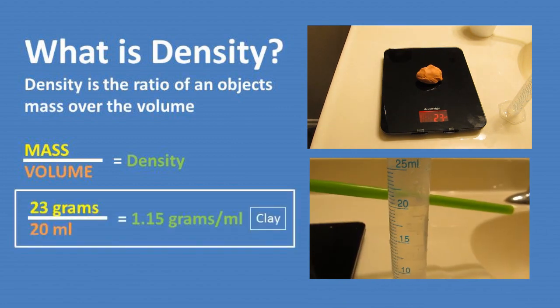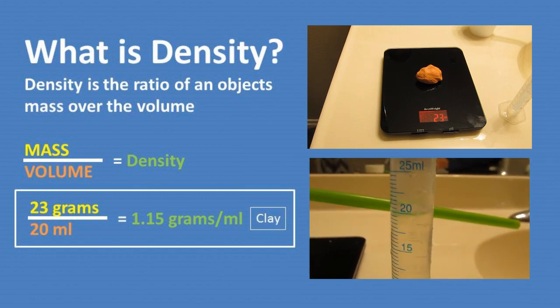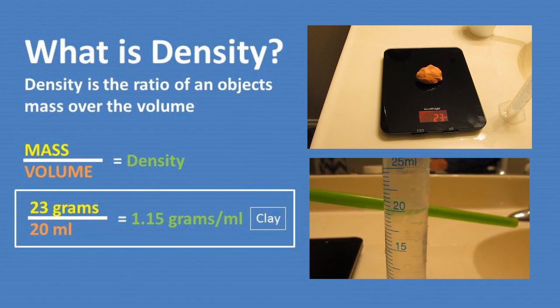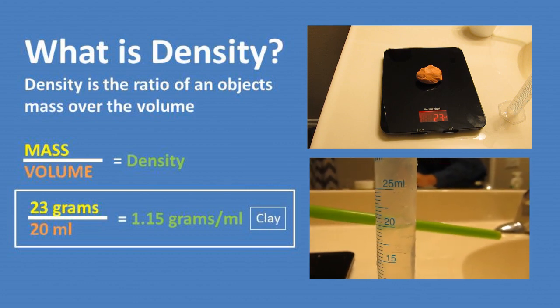Now if we take the 23 gram mass and divide by the 20 milliliter volume, we get 1.15 grams per milliliter. This means that for every milliliter of space the clay takes up, it weighs 1.15 grams.